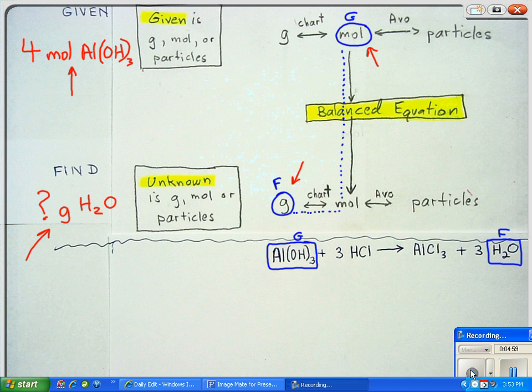We're starting with moles. So we have four moles of aluminum hydroxide over one. Now the next fraction that we're going to need is, we've just taken the trip from the moles up here of the given to the moles, or I'm sorry, we're going to take the trip of the moles up here to the given, which is down here. And let's see how that looks.